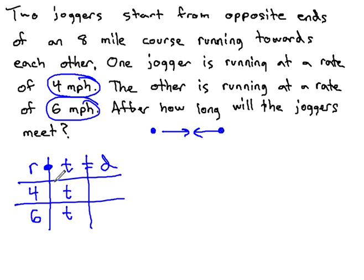To calculate distance, we multiply rate times time. 4 times t is 4t, and 6 times t is 6t.